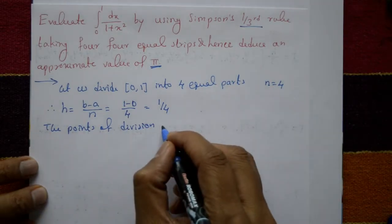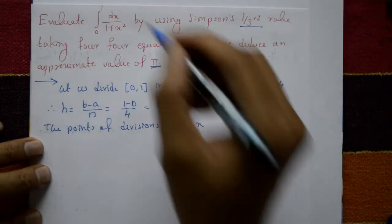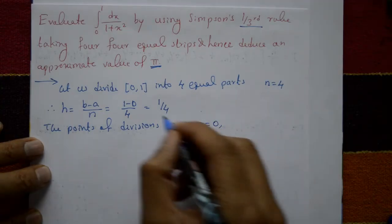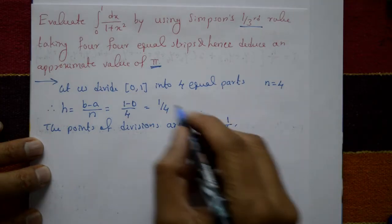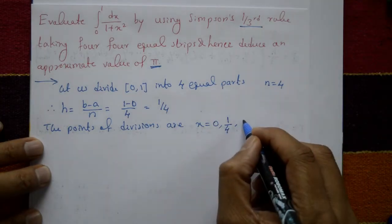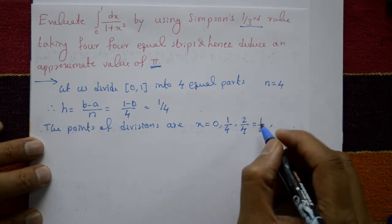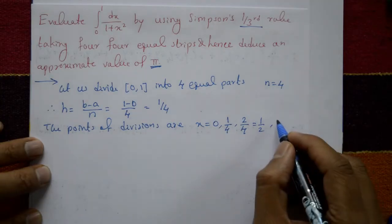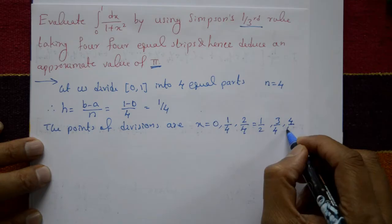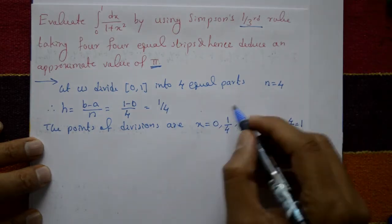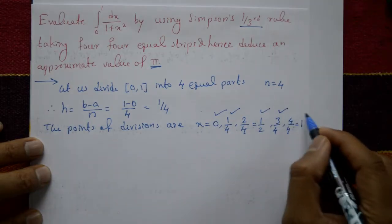The points of division are: x₀ = 0, then adding the width 1/4 each time: x₁ = 1/4, x₂ = 2/4 = 1/2, x₃ = 3/4, and x₄ = 4/4 = 1. So the x-values are 0, 1/4, 1/2, 3/4, and 1.